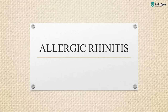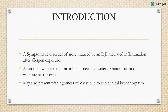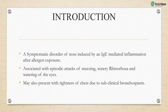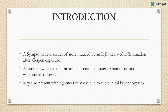Let's begin with the introduction. Allergic rhinitis is a symptomatic disorder of the nose induced by an IgE-mediated inflammation after allergen exposure, associated with episodic attacks of sneezing, watery rhinorrhea, and watering of the eyes. It may also present with tightness of chest due to subclinical bronchospasm. The word rhinitis refers to inflammation of the nasal passages, causing symptoms including sneezing, itching, nasal congestion, runny nose, and post-nasal drip. It is clinically defined by four major symptoms: anterior or posterior rhinorrhea, sneezing, nasal itching, and nasal congestion.